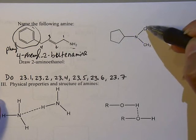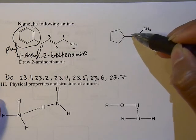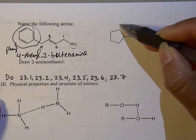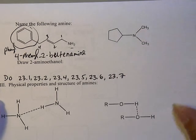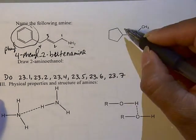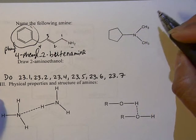So we have two R groups attached to the nitrogen. And you can think of this as the parent amine, because it's got the most number of carbons attached to that amine.